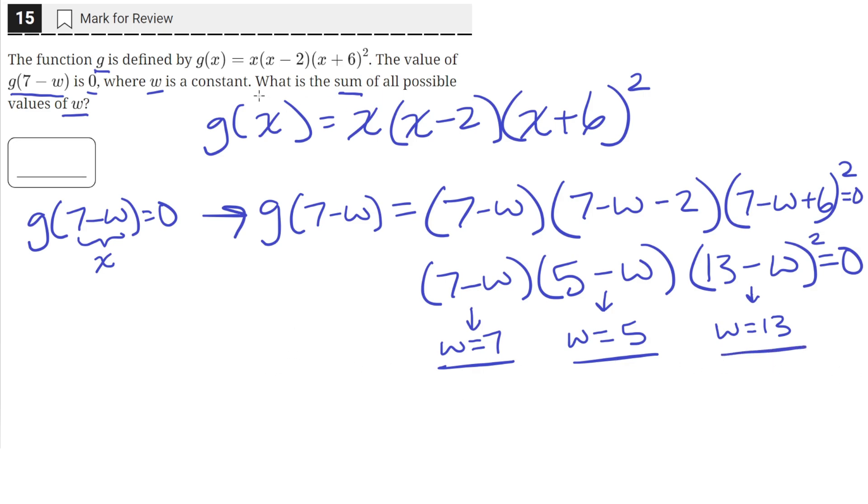But the problem asked us for the sum of all possible values of w. So we would just add these all together. 7 plus 5 plus 13. So this would just give us a value of 25. So 25 is the sum of all possible values of w.